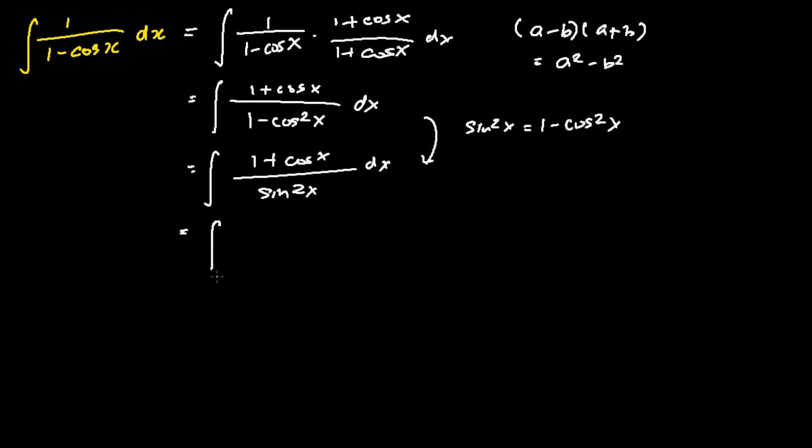Then we split the fraction out into two fractions. The first fraction will be the integral of 1 over sine square x dx, and the second fraction will be cosine x over sine square x dx.